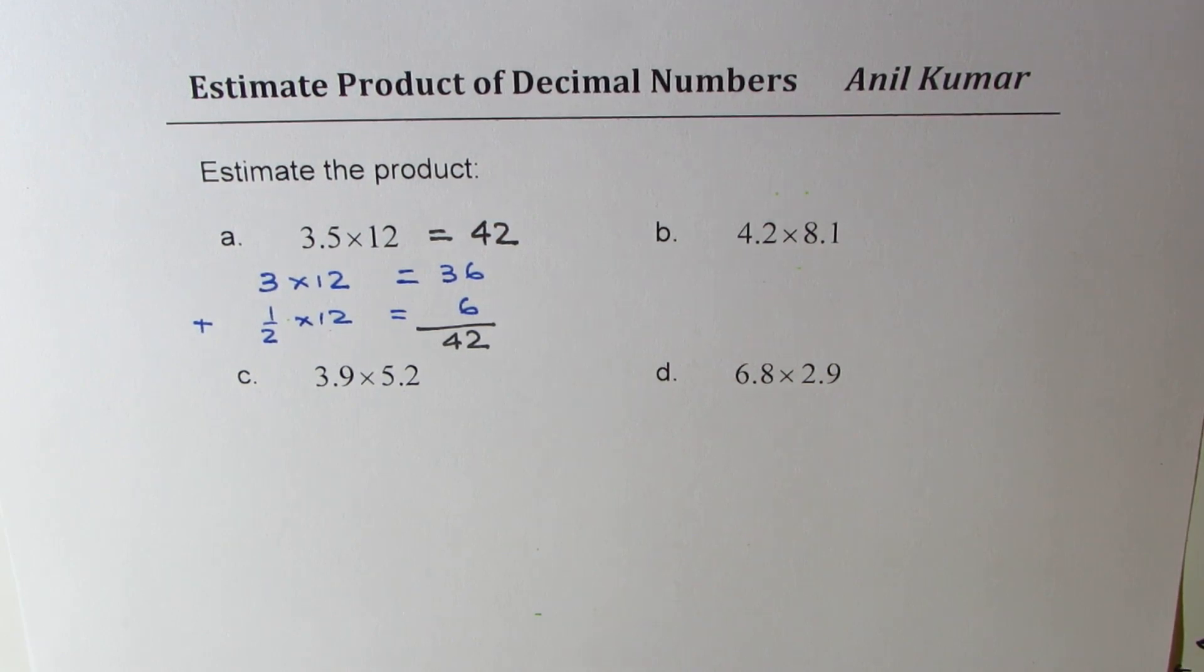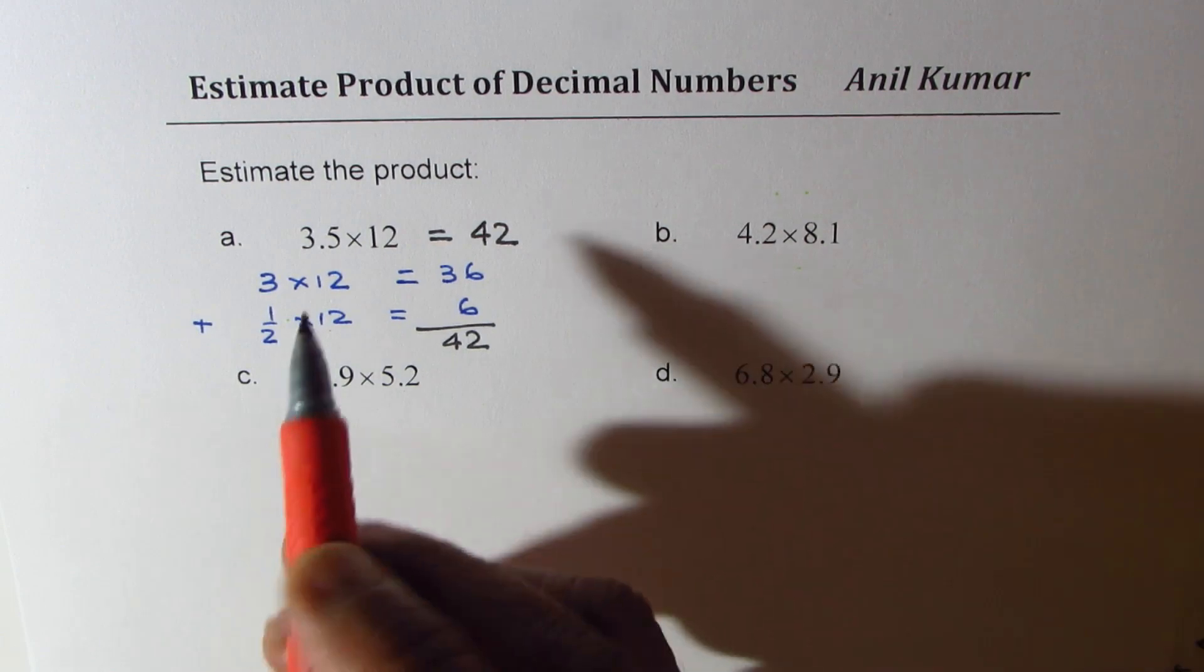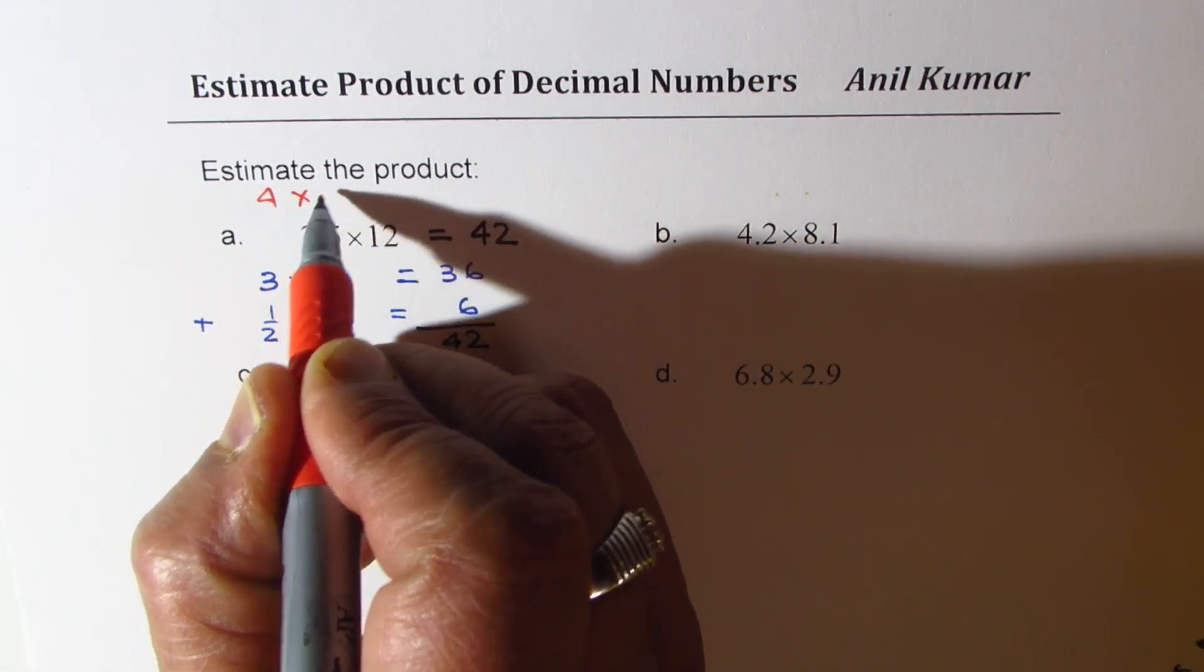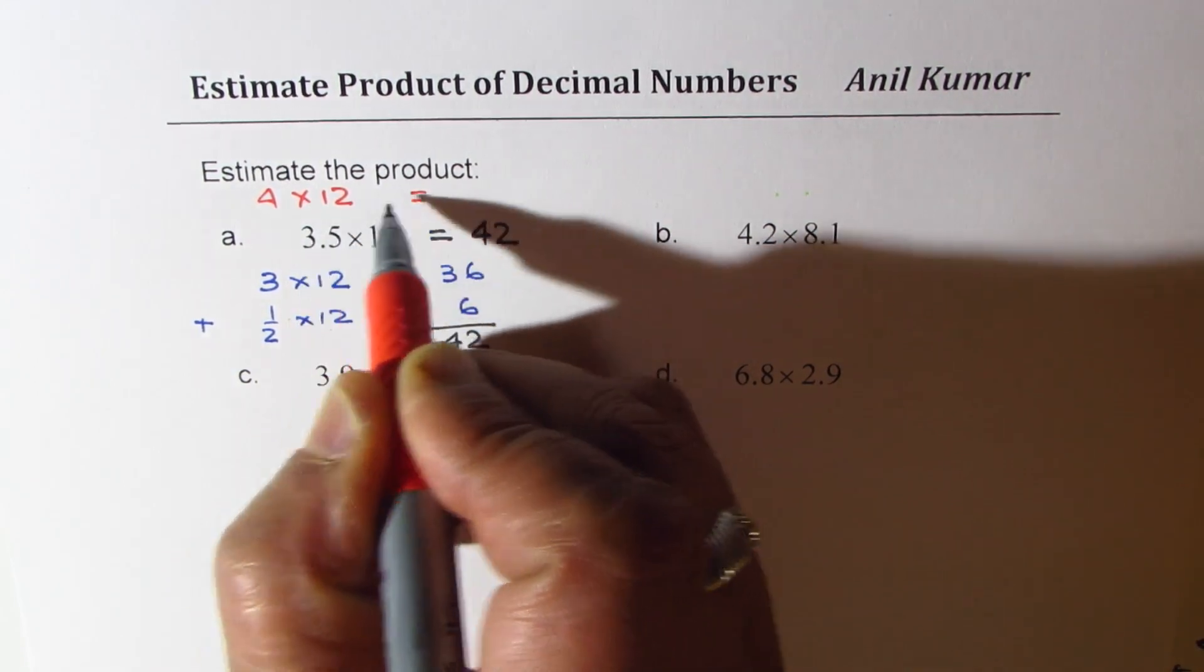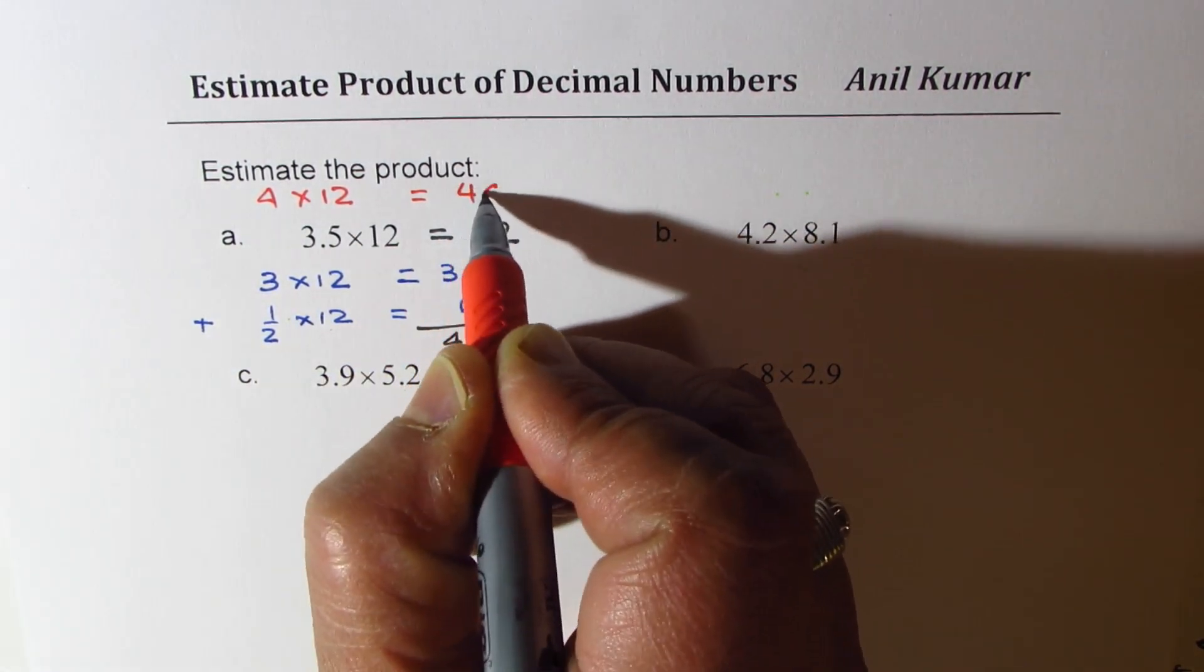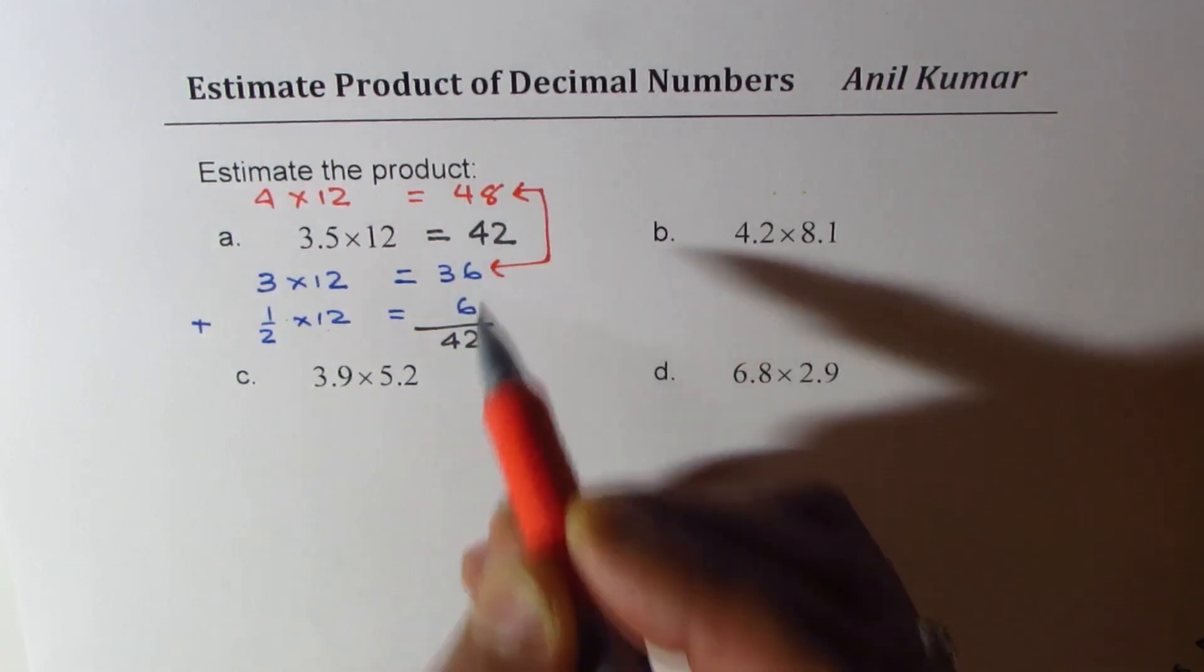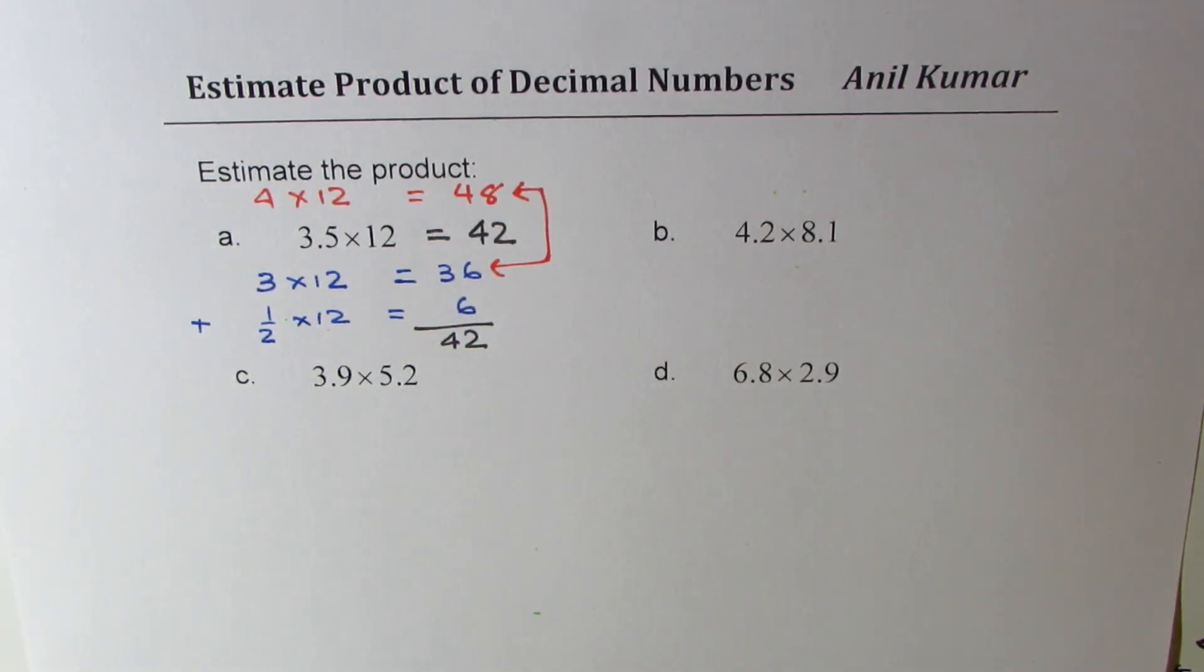You could also think about doing 3 times 12 and 4 times 12. If I do 4 times 12, I get 48, and the number in between these two is our estimate, which is 42. So that could be another approach to get the product of decimal numbers.